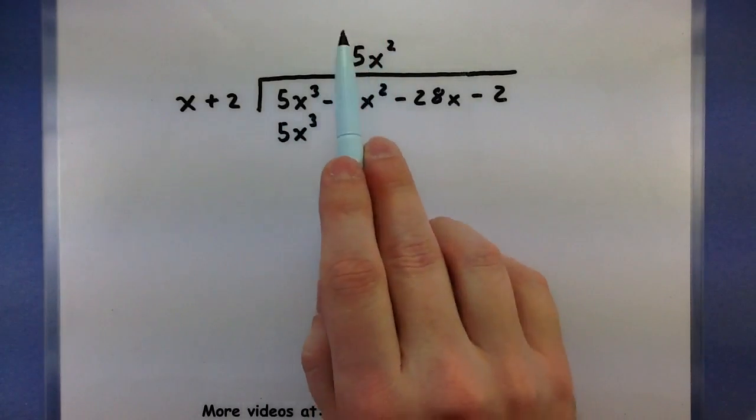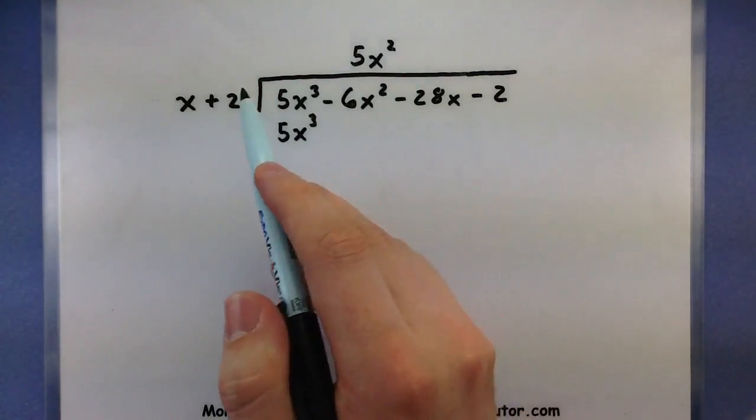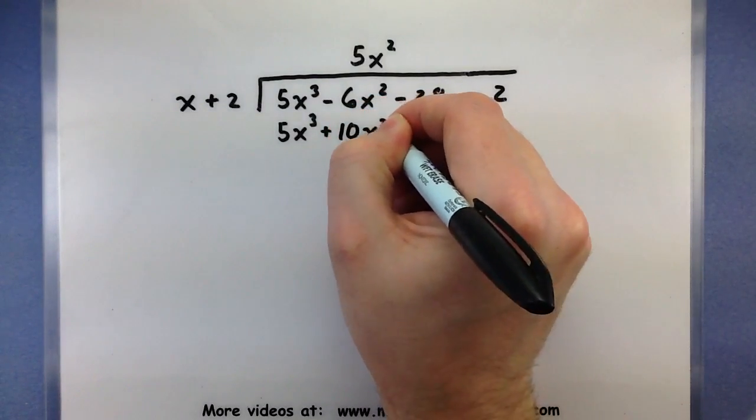Now we also want to take this and multiply it by the next term. So multiply by the 2. So 5x² multiplied by 2 is plus 10x².